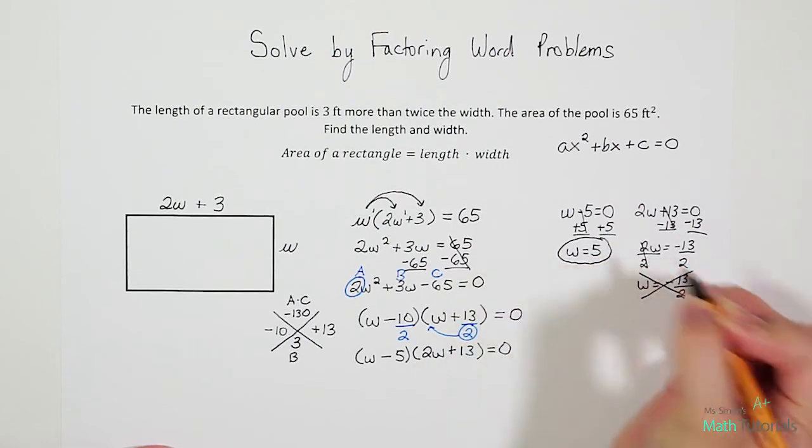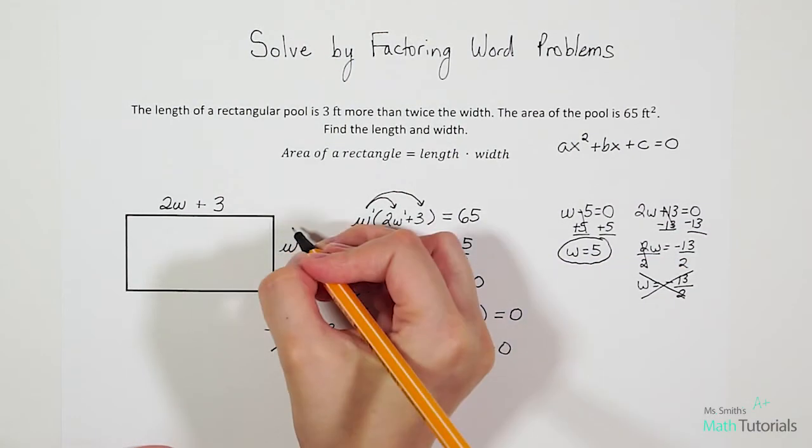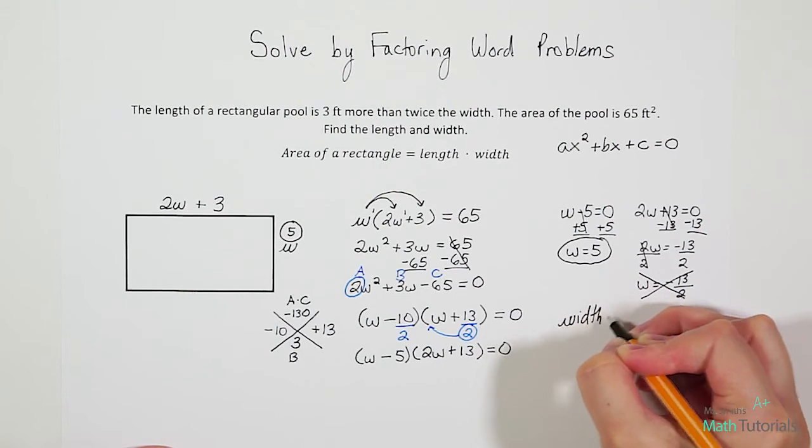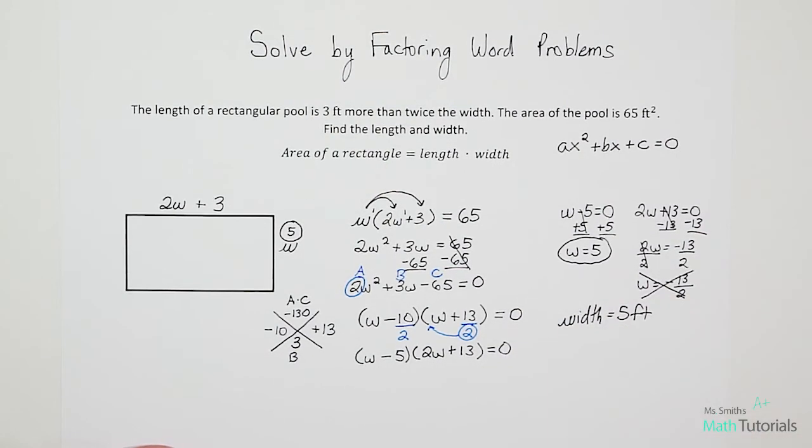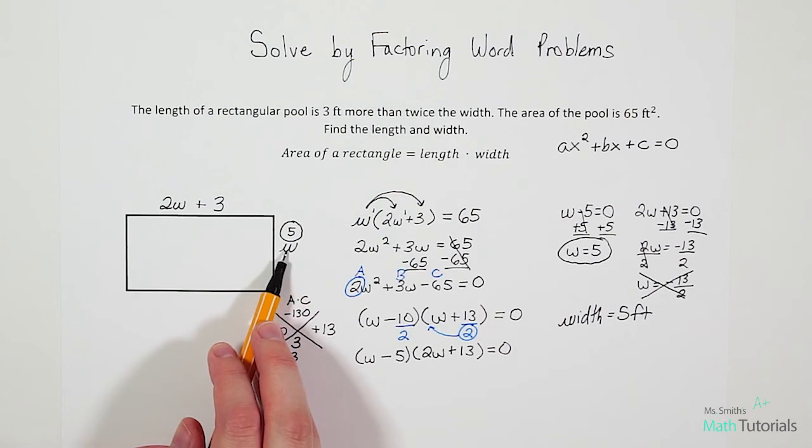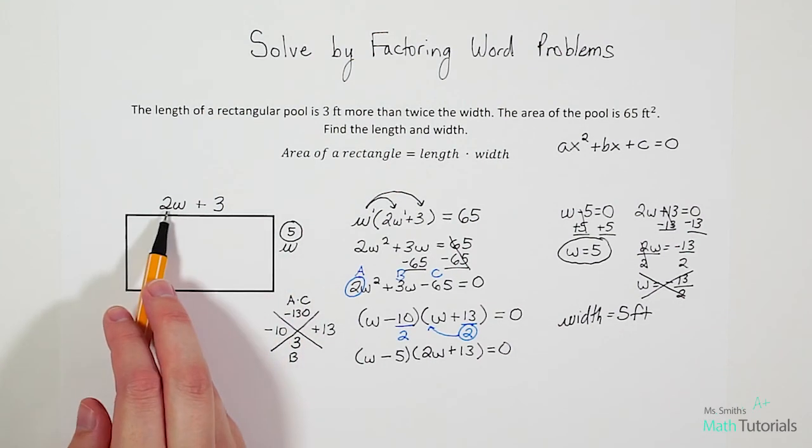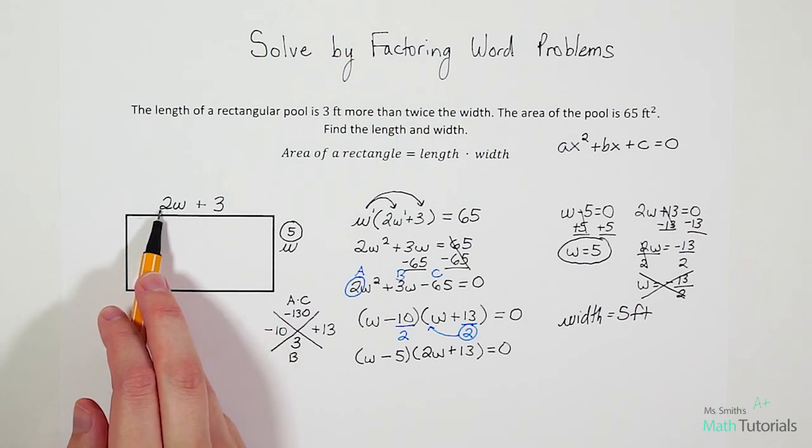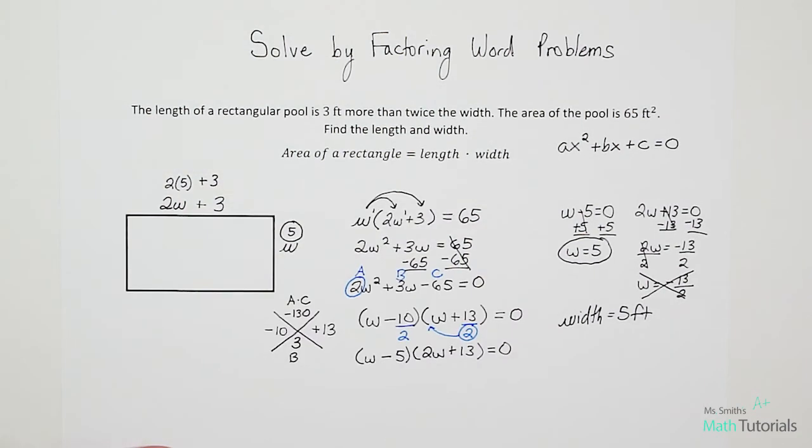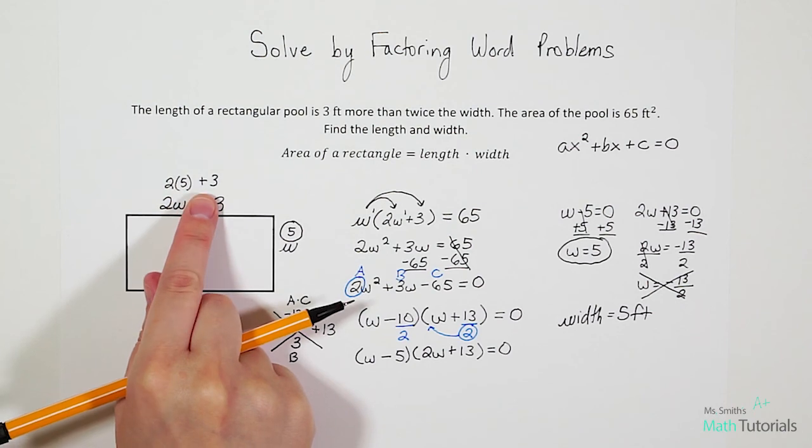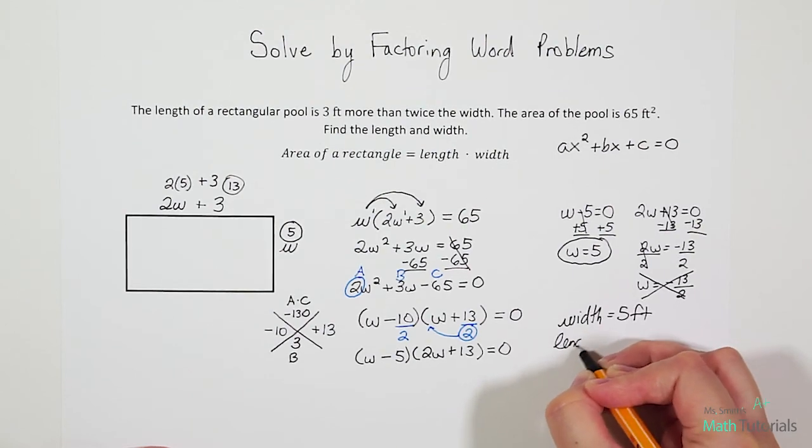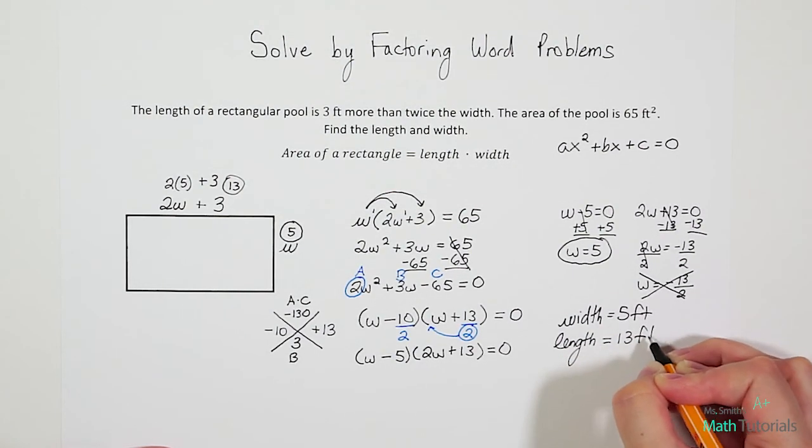So our width is 5 feet. We can go ahead and write that here. Width is 5 feet. But we don't just want to know the width, right? We also want to know the length because they said find length and width. But once we know the width W is 5, then we can just easily plug it into our length. So this was 2 times W plus 3. So now we're just going to make it 2 times 5 plus 3. Well, 2 times 5 is 10 and then plus 3 is 13. So our length is 13 feet.